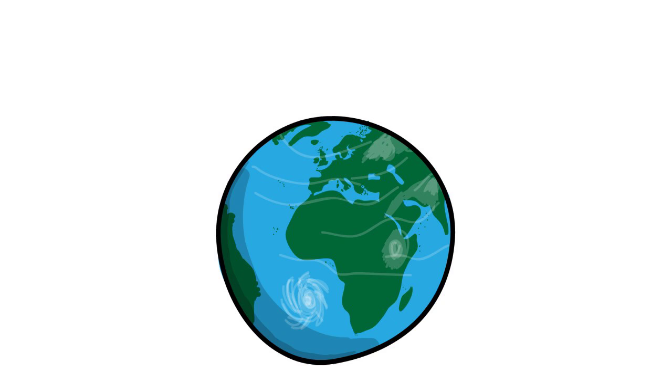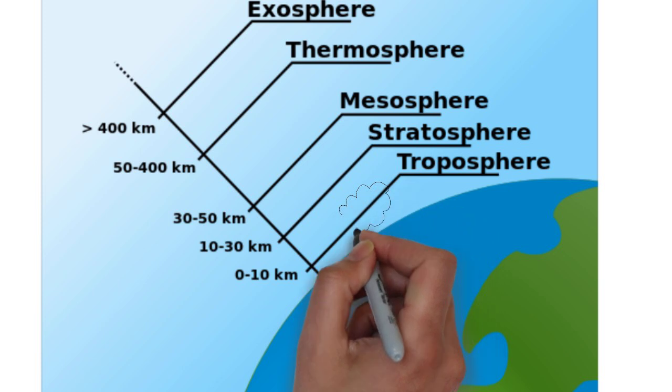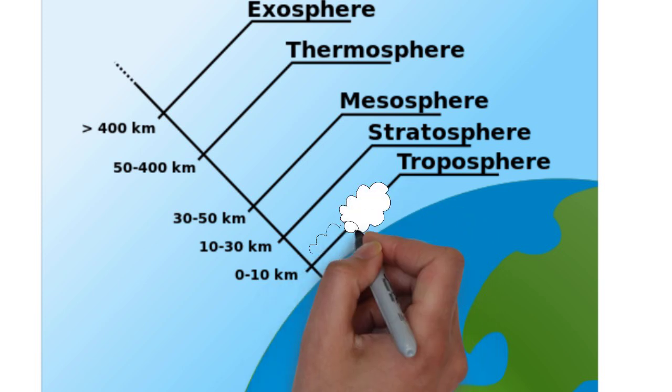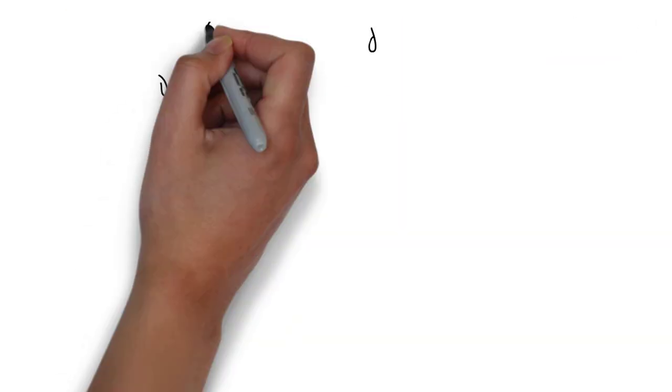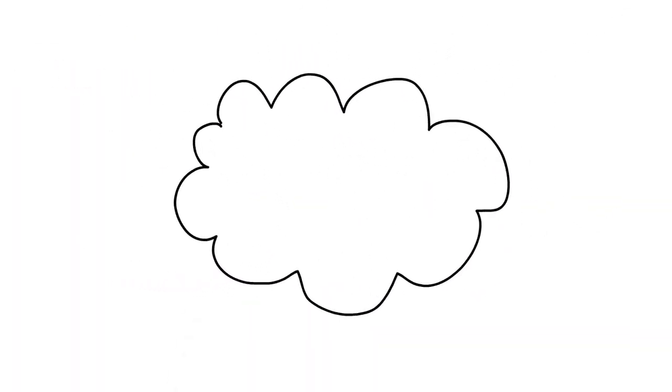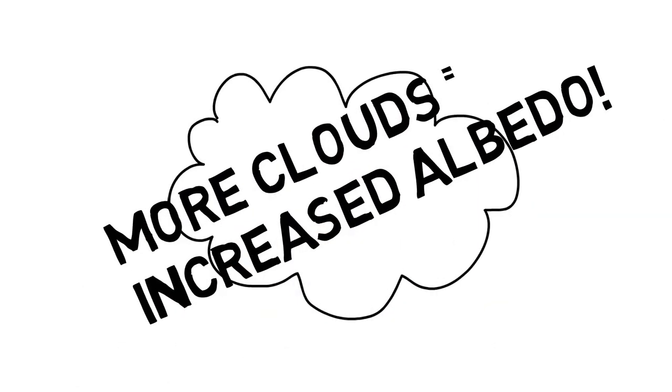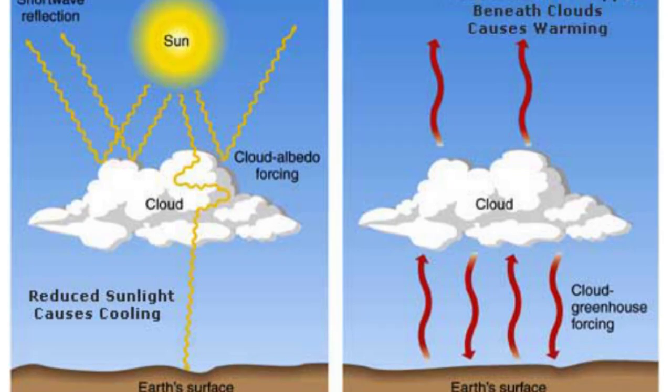Most clouds form in the troposphere and play an important role in the albedo effect of the planet. More water vapor in the atmosphere means more cloud formation, and more clouds lead to increased albedo of the Earth. Because a cloud usually has higher albedo than the surface beneath it, the cloud reflects more shortwave radiation back to space than the surface would in the absence of the cloud, thus leaving less solar energy available to heat the surface and atmosphere.